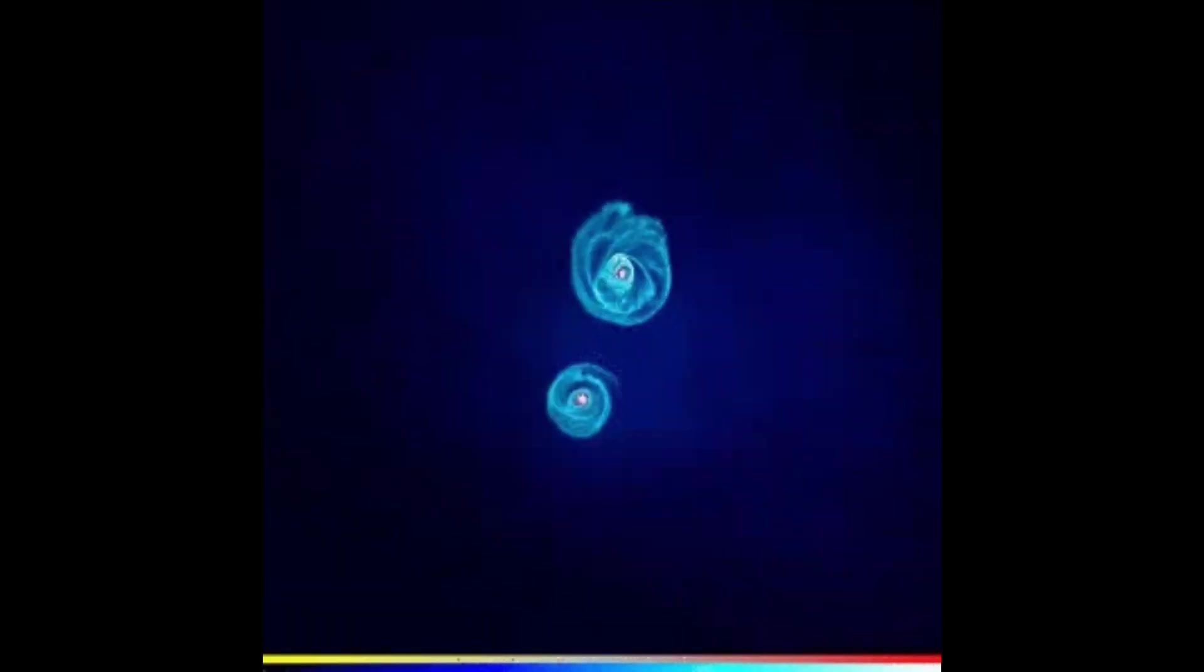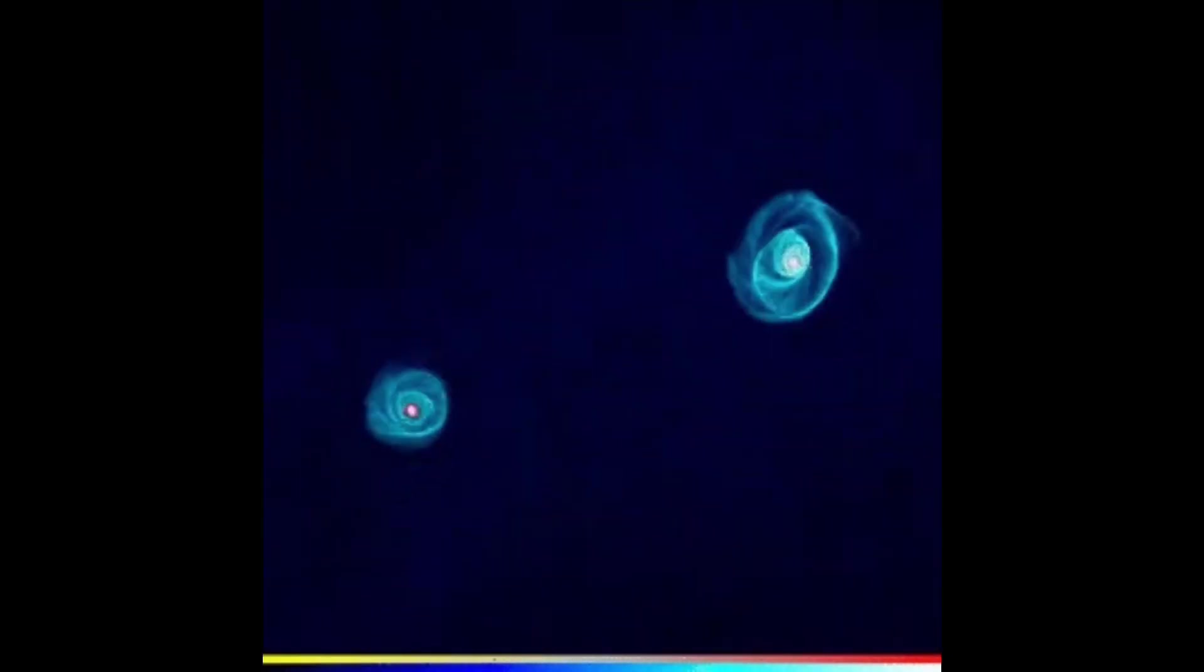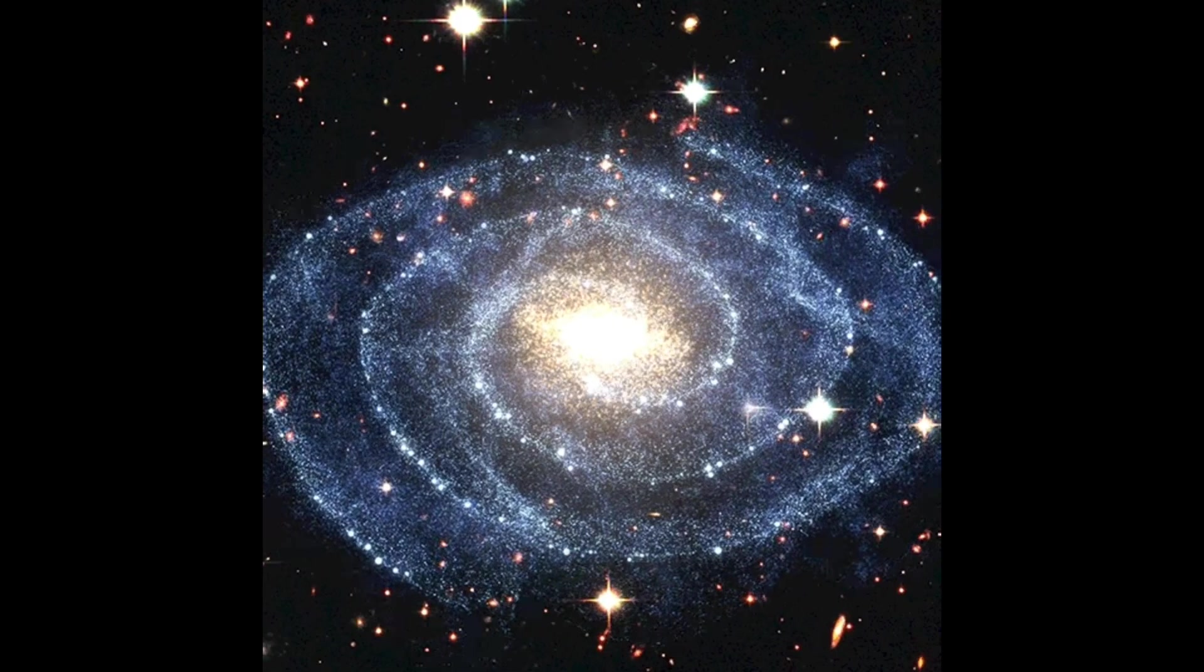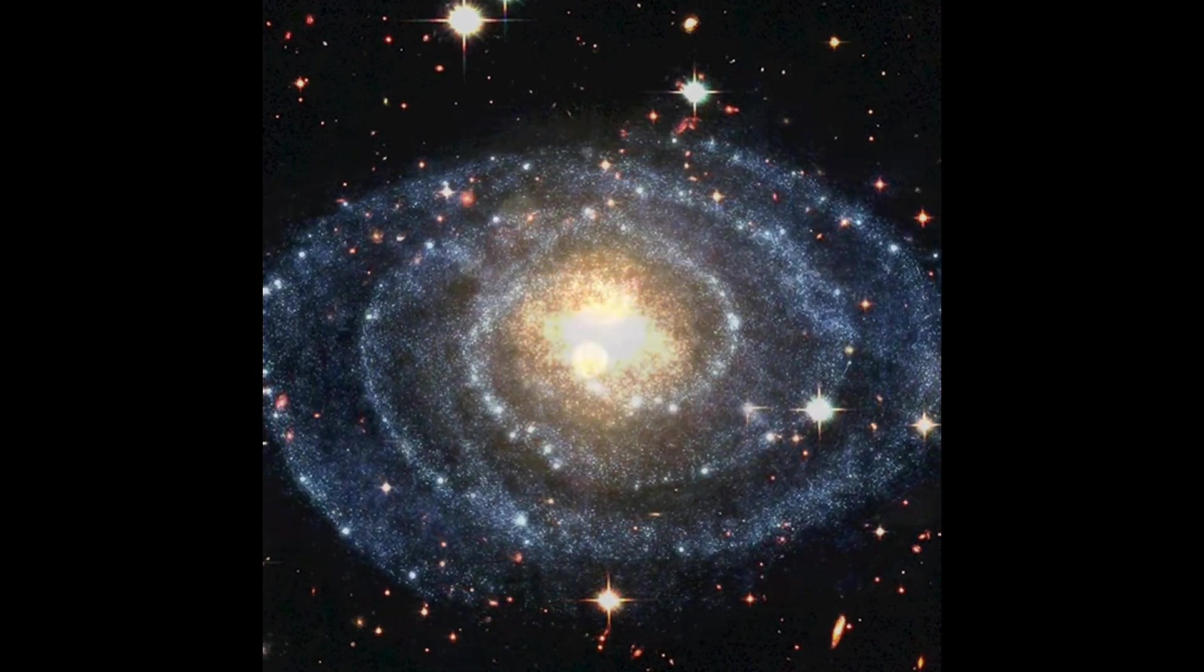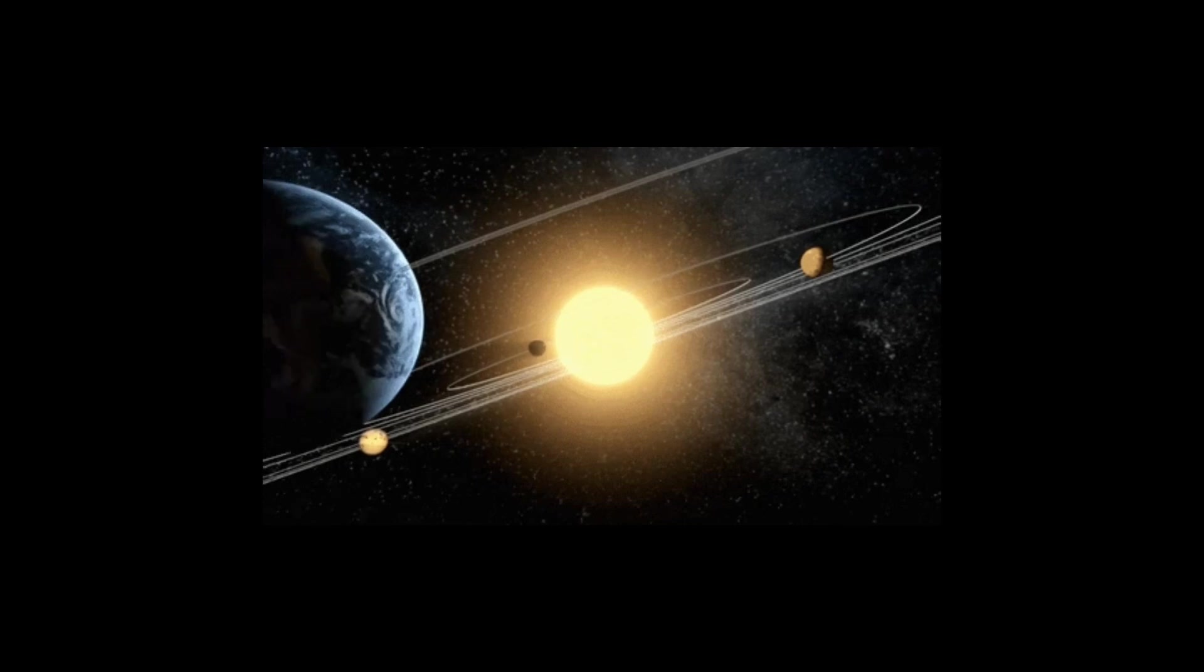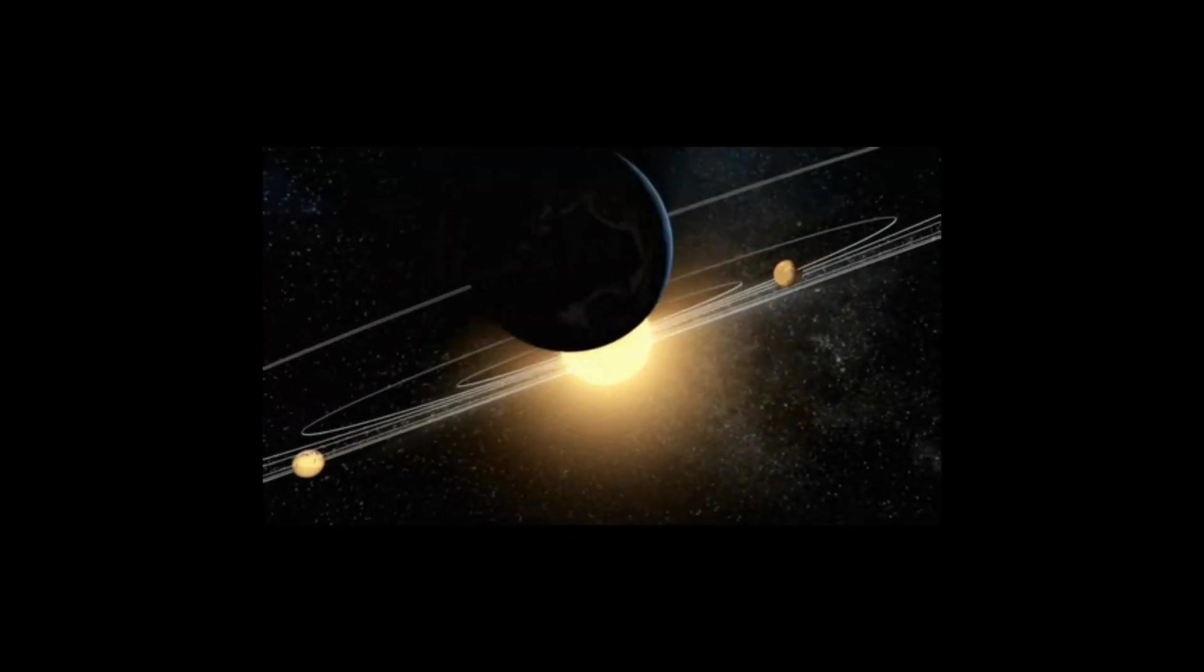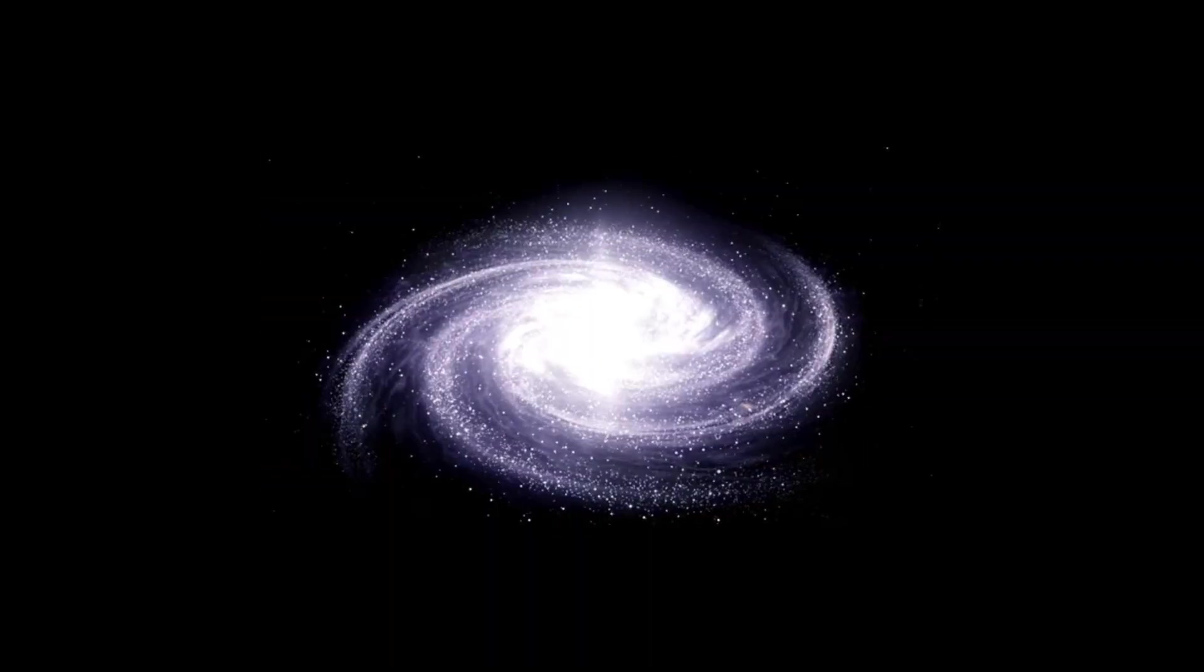Galactic cannibalism is when a larger galaxy, via gravitational interactions, mergers with a smaller one resulting in the creation of a bigger galaxy. It takes our solar system around 230 million years to complete one orbit around the galactic center.